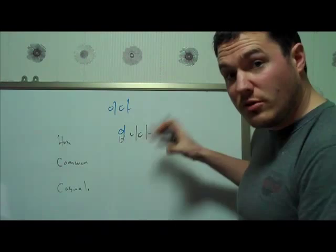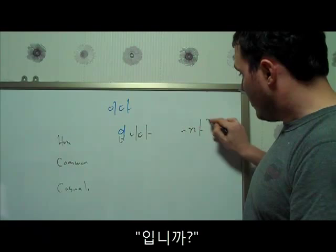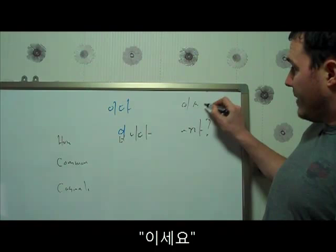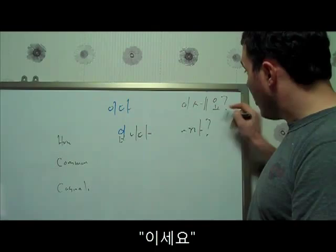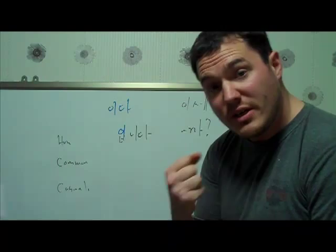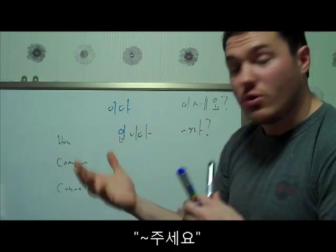입니다, the question 입니까. Here's our same verb 이, 세요 is a common honorific sort of ending - it's a question or a polite command. The word to give, give me please is 주세요, and that 세요 is a quite honorific form of command or question.